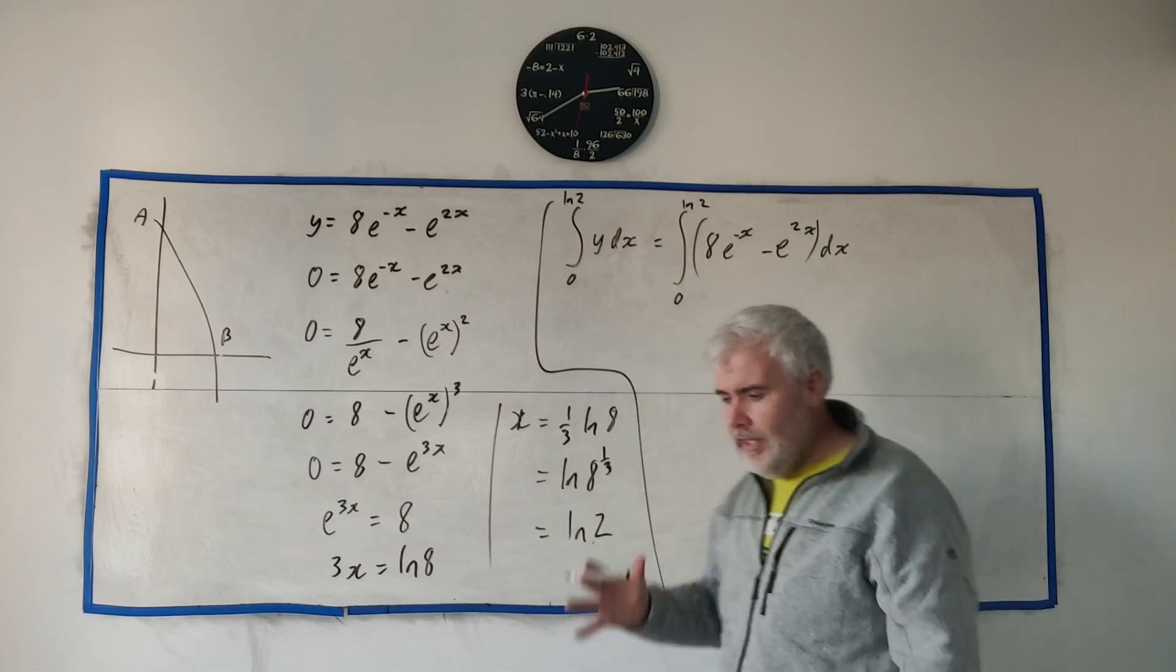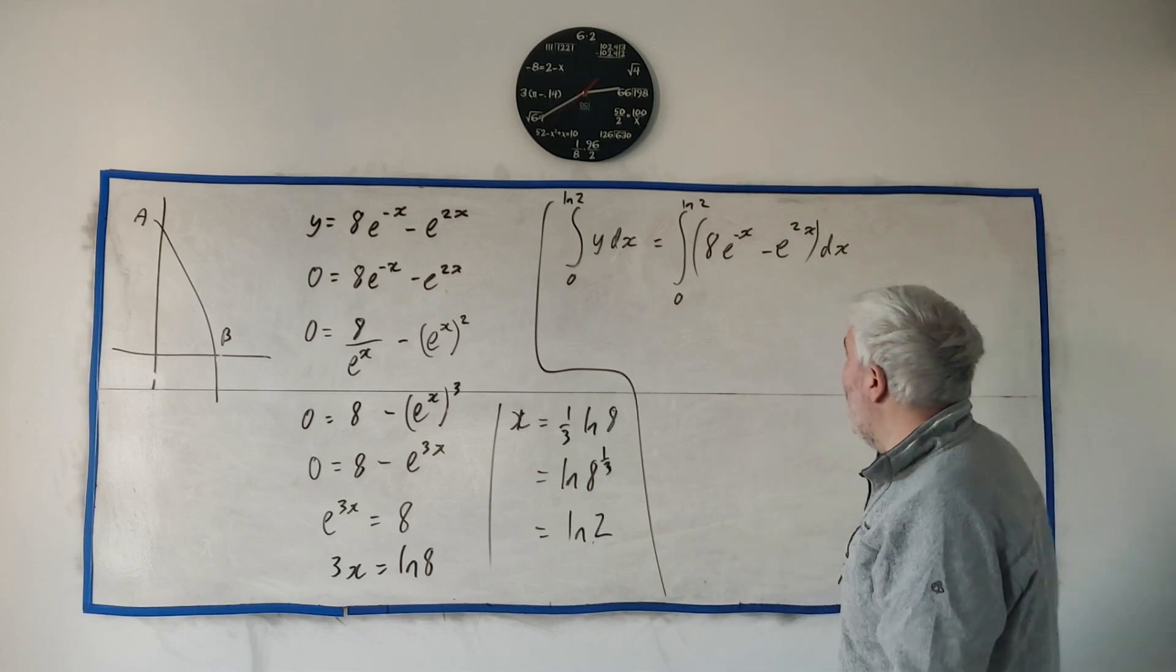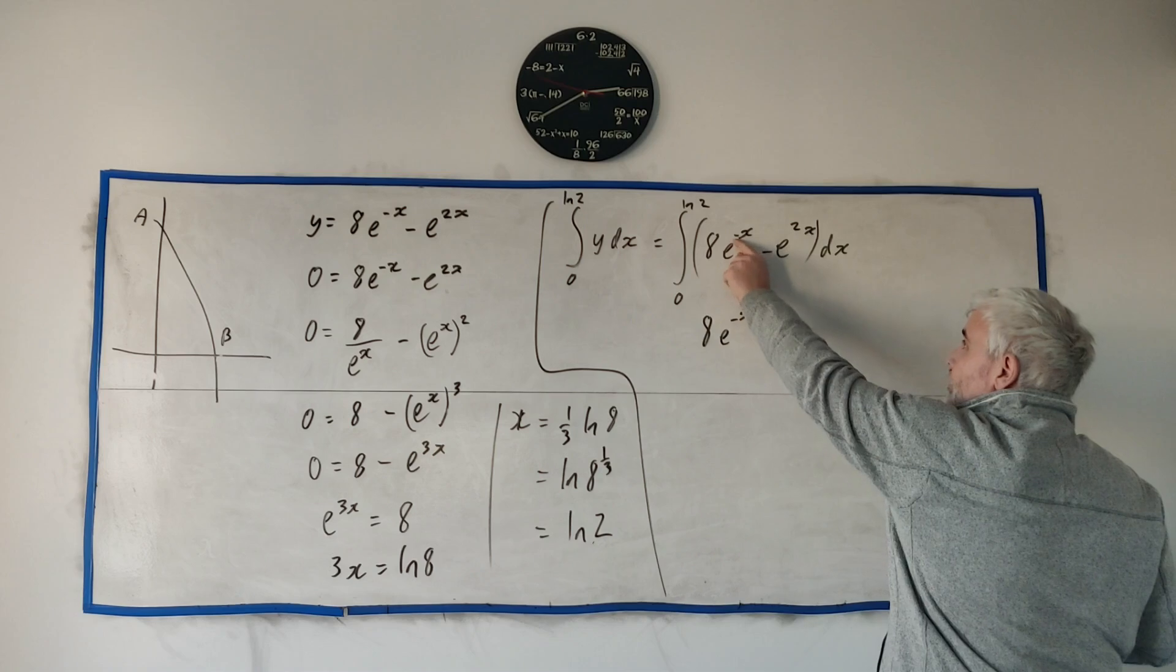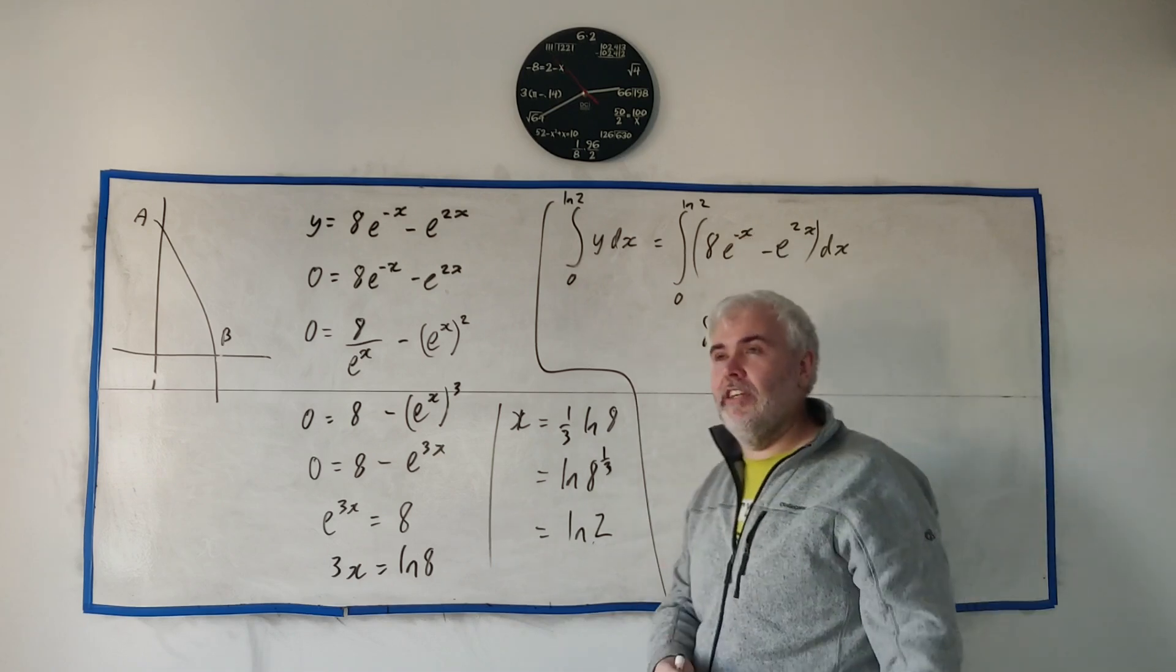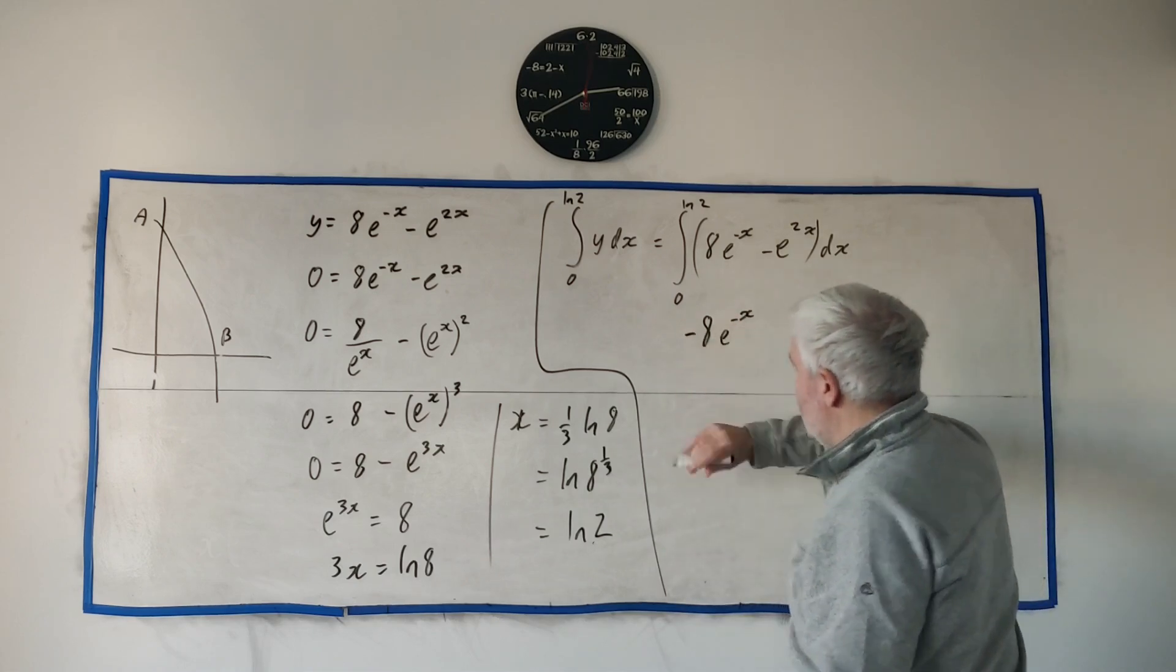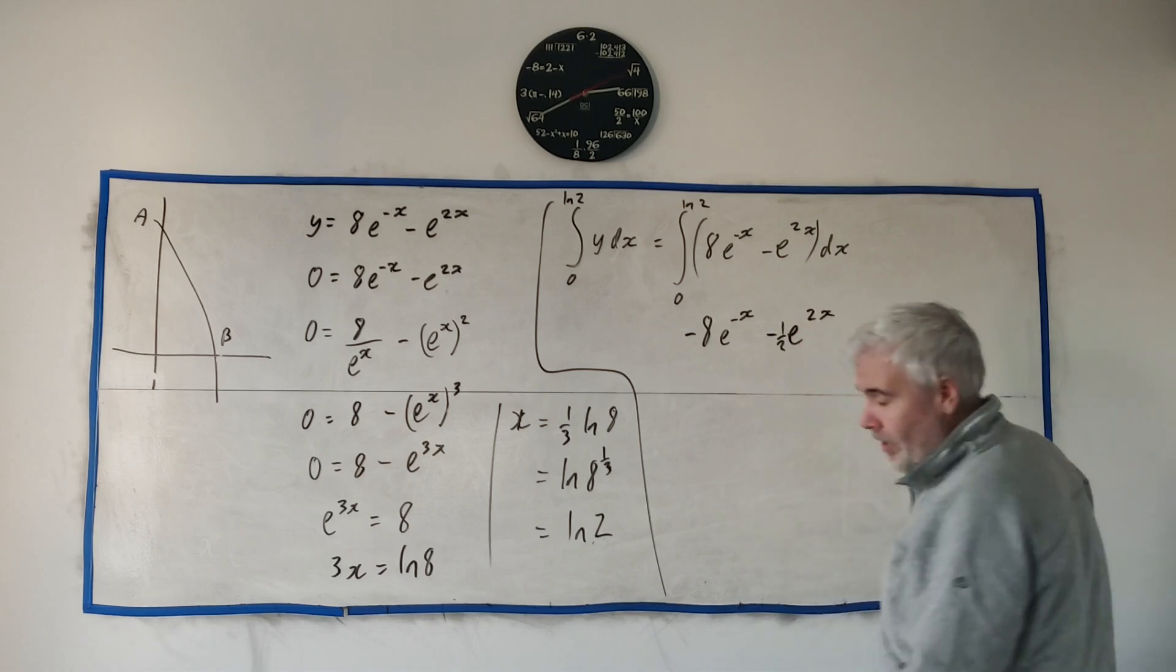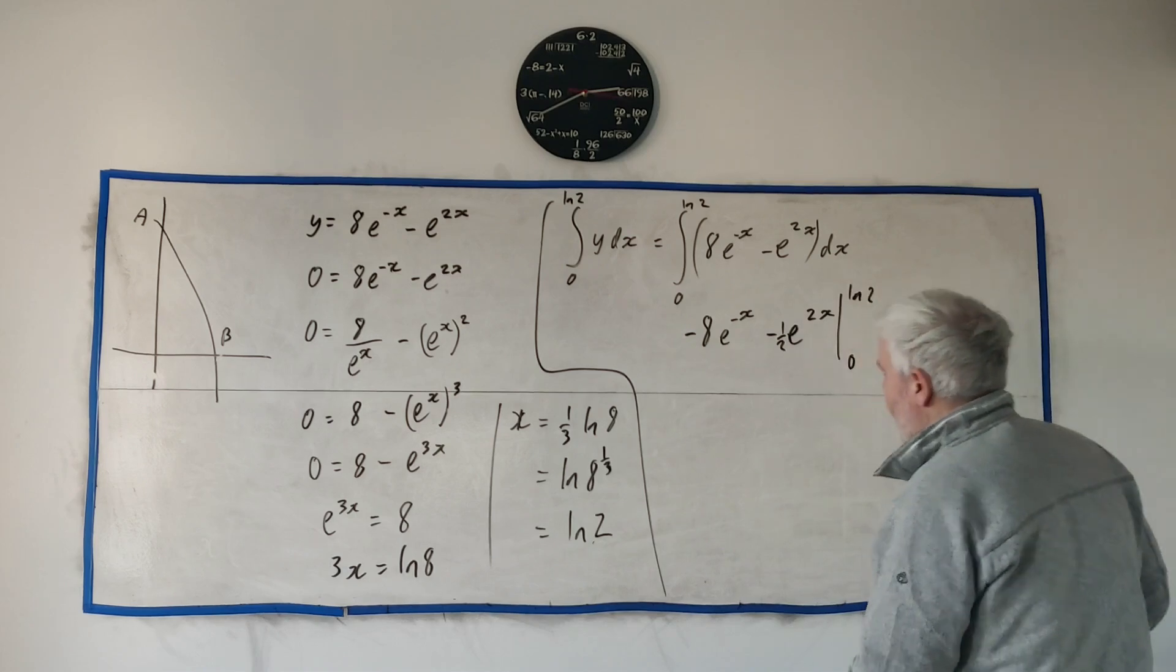Thankfully, once again, e is really easy to integrate. Differentiate and integrate are different sides of the same coin. It's really easy to integrate, nothing changes. We get the 8 e to the minus x except we divide by the derivative of what's up here when the derivative doesn't have an x in it. So we divide by minus 1, which is the same as multiplying by minus 1. This guy doesn't change, it just gets divided by 2, so we'll put in a half here. This is still evaluated between 0 and natural log 2.